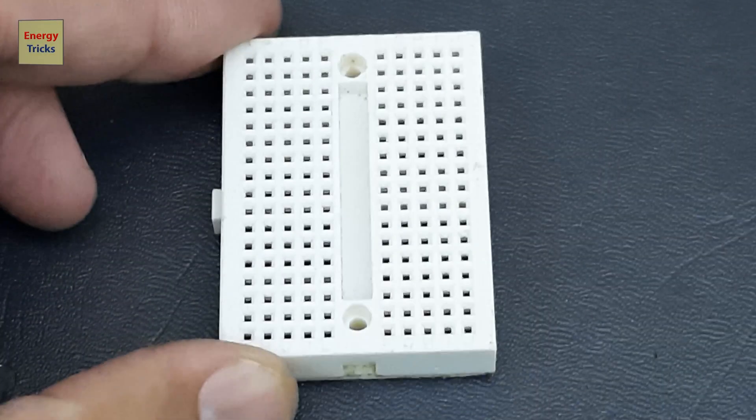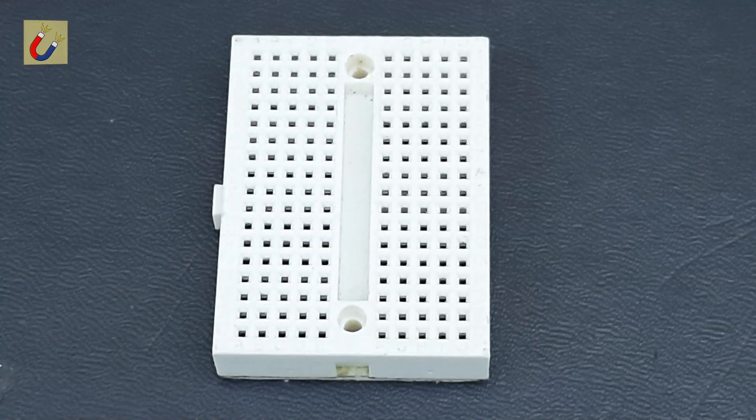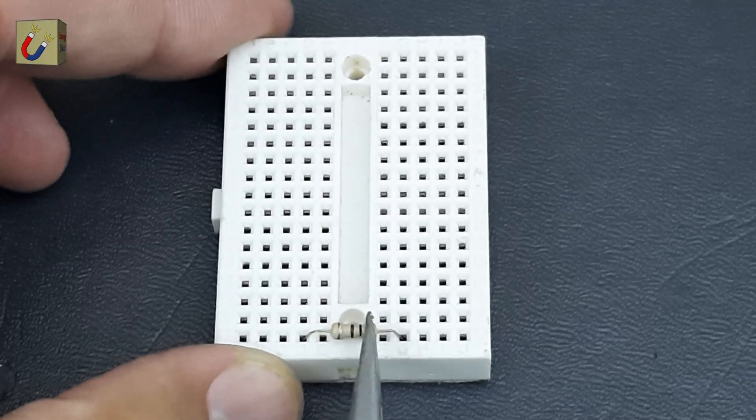To get started, you'll need a breadboard as the base for assembling the components. Begin by inserting a 100-ohm resistor into the breadboard.